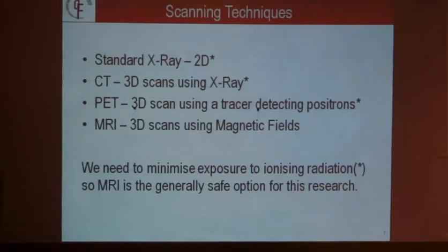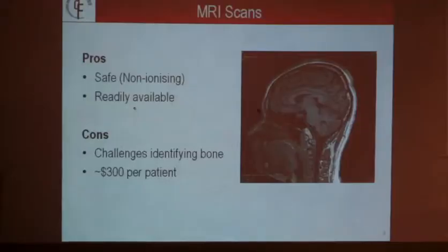There are a number of ways we can acquire data: standard X-rays, but those only give a two-dimensional view, not really useful for simulation. We can use CTs, still using X-rays, or PET which uses a contrasting material and detects radiation from that. The problem with those first three options is they use ionising radiation, which can lead to cancer. To avoid that, my focus is on MRI technology which is, unless you have metal inside your body, pretty safe. It's also readily available — most hospitals will have access to at least one MR machine. One challenge is that MRI can't detect bone, and the stiffer materials like bone are the more important structural materials. There's also the cost of scanning a large population.